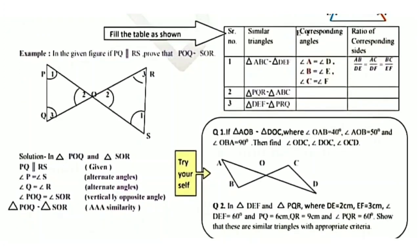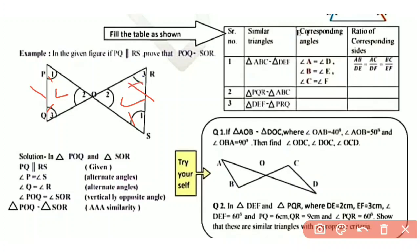Now let's look at the example. In the given figure, if PQ is parallel to RS, prove that triangle POQ is similar to triangle SOR. Given: PQ is parallel to RS. In triangle POQ and triangle SOR, since PQ is parallel to RS, angle P equals angle S (alternate angles) and angle Q equals angle R (alternate angles). Angle O is vertically opposite. Since all corresponding angles are equal, triangle POQ is similar to triangle SOR by the AAA similarity criteria.